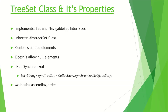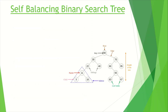TreeSet maintains ascending order of elements. It uses a self-balancing binary search tree for storing elements. To be specific, TreeSet uses a red-black tree. It is a kind of self-balancing binary search tree where each node stores an extra bit to represent the color, which is used to ensure that the tree remains balanced during insertion or deletion.